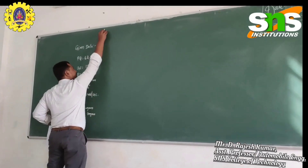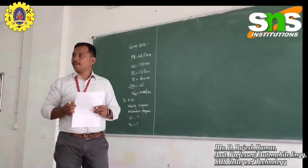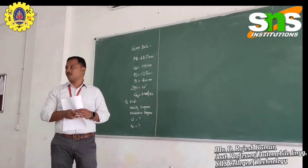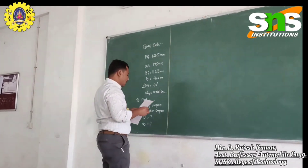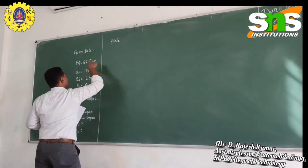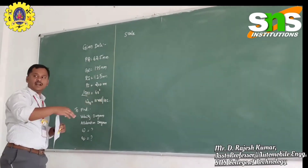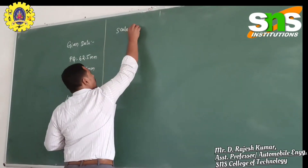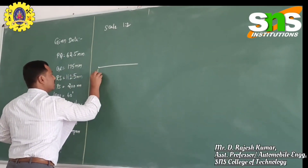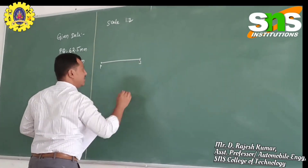Now let us start drawing the space diagram. This is a 4-bar mechanism PQRS. We already know that P and S lie on the same line. I am scaling — all measurements are in millimeters and cannot be drawn directly on paper, so I am scaling at 1 is to 2. I am first drawing a line PS. PS equals 200 mm, so at scale it is 100 mm, which means 10 cm.